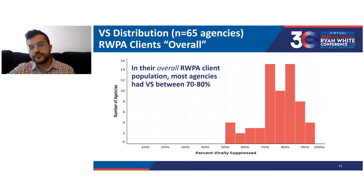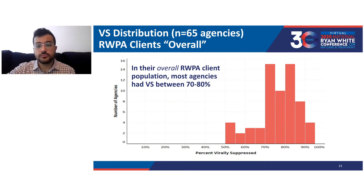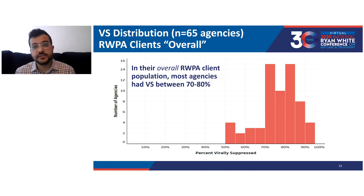This graph shows the distribution of viral suppression across all New York City Ryan White Part A agencies for clients overall. Most agencies had a viral suppression between 70% to 80%, which makes sense because the Ryan White Part A-wide viral suppression for all NYC clients falls at 79%. On the Y axis you see the number of agencies — most of the 65 who received the report fell between 70 and 80% for their overall clients.